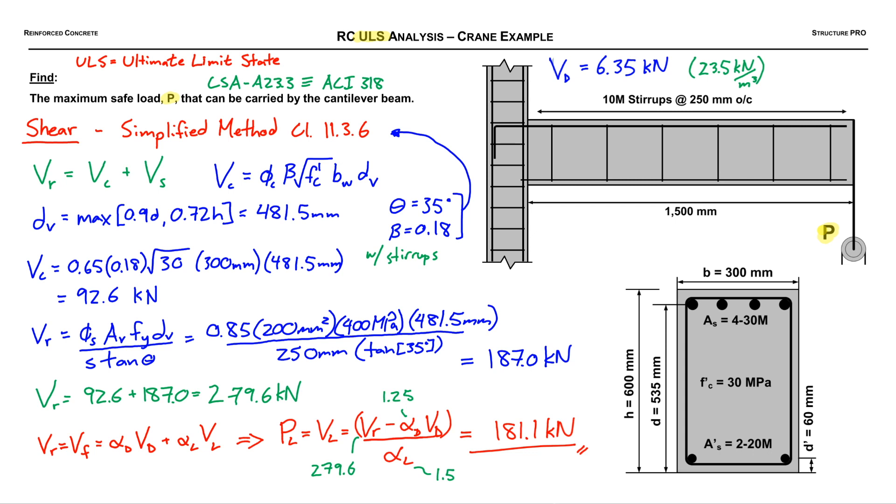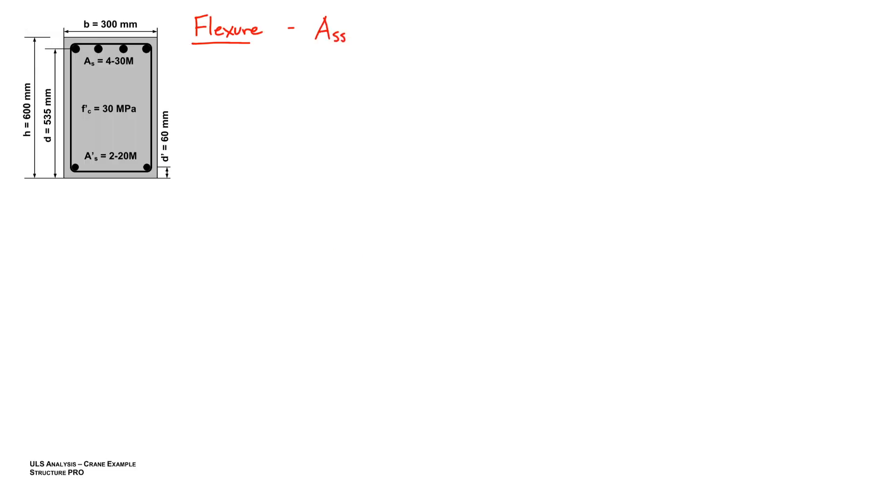Now we're going to go and do it for flexure and compare the two values. It's time to analyze this doubly reinforced beam in flexure. This is under a negative moment, so our primary steel is at the top, our tension steel. We're going to assume that the tension steel and the compression steel are both yielding.